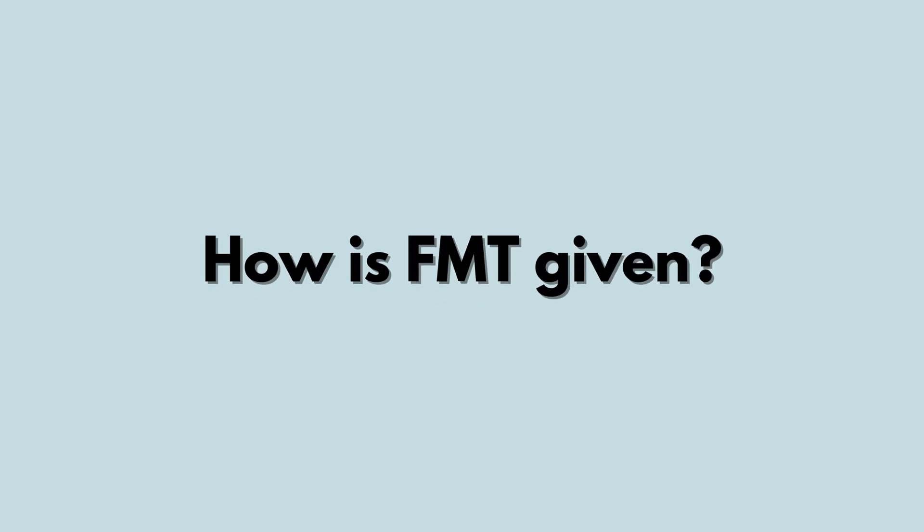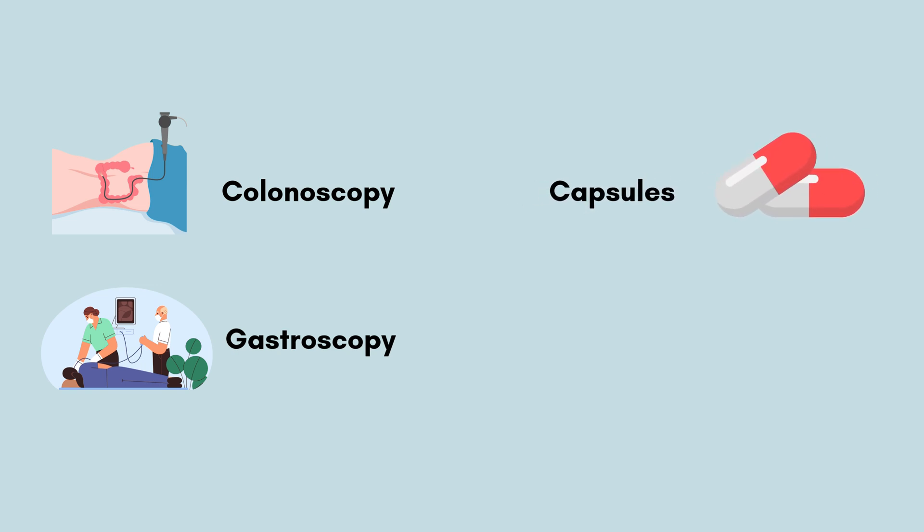How is FMT given? The good bacteria from a donor can be transferred to your gut by colonoscopy, a tube through your rectum, gastroscopy, a tube through your mouth, capsules, medicine that is taken by mouth, or a feeding tube where a machine sends food from a bag into your body through a tube.